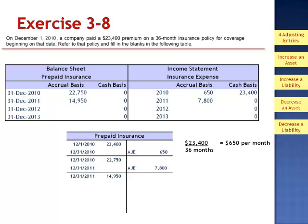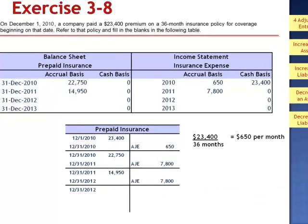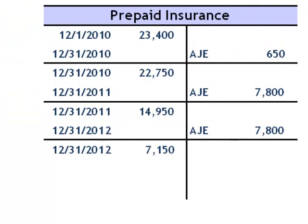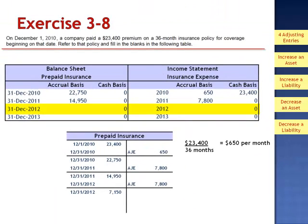During 2012, an additional 12 months of expense is incurred. The journal entry is a debit to insurance expense for $7,800 and a credit to prepaid insurance. This drops the balance in prepaid insurance to $7,150. The 2012 financial statements will report $7,150 on the balance sheet as prepaid insurance and $7,800 on the income statement as insurance expense.